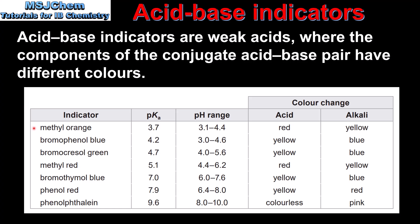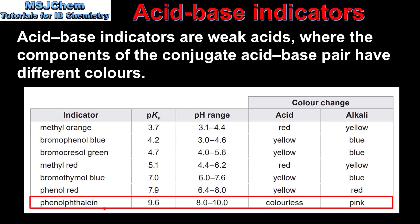Each indicator has a pKa value, a pH range, and the color change in an acidic and alkaline solution. For example, the commonly used indicator phenolphthalein has a pKa of 9.6, a pH range of between 8 and 10, and is colorless in an acidic solution and pink in an alkaline solution. The pH range is the pH within which the indicator changes color, and this is usually plus or minus 1 pH unit of the pKa value.